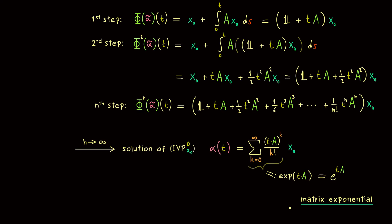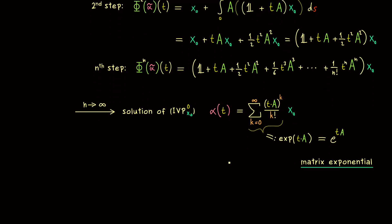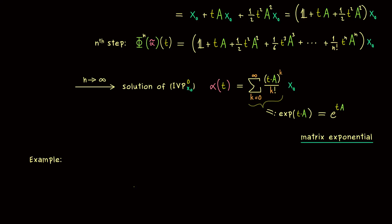Please don't forget the restrictions: we need a homogeneous and autonomous system. But under these assumptions, solving the system just means calculating the matrix exponential. And this is exactly what we will now do in a concrete example. For visualization purposes it's helpful to take a two-dimensional system.